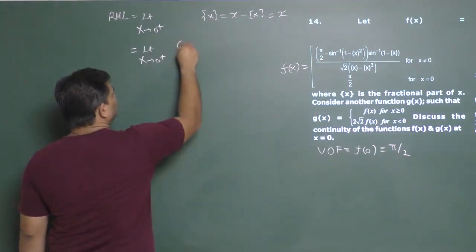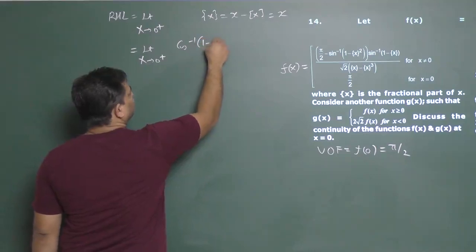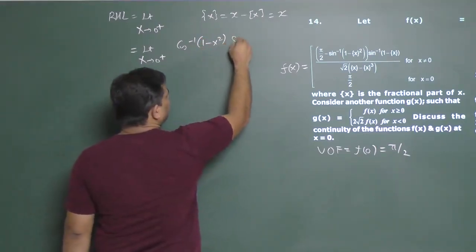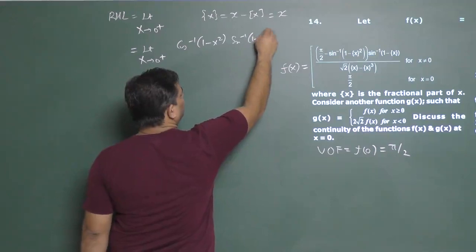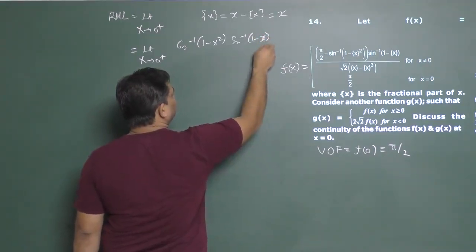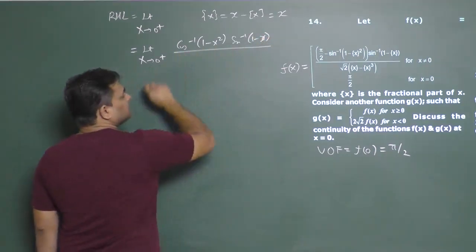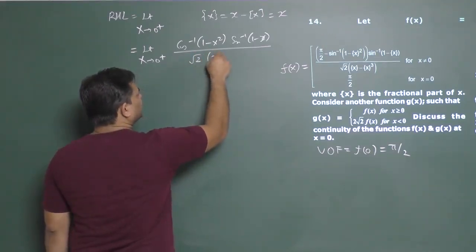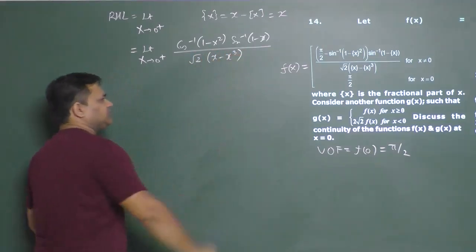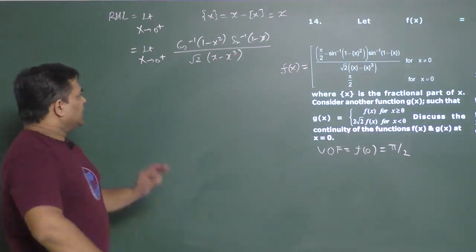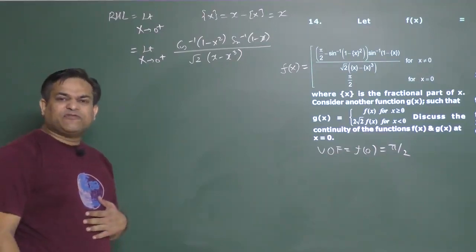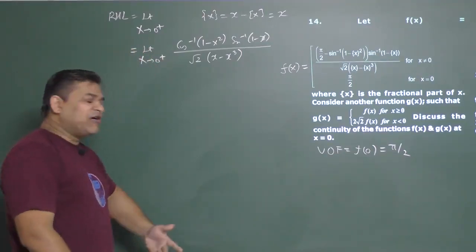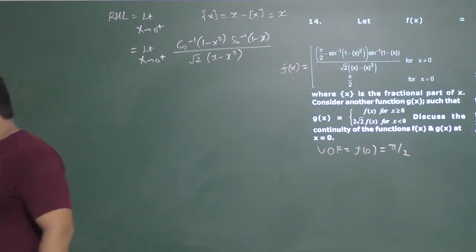So the expression becomes cos⁻¹(1 − x²) in the numerator, and sin⁻¹(1 − x) over root 2 times (x − x³). This function is defined on the right-hand side.